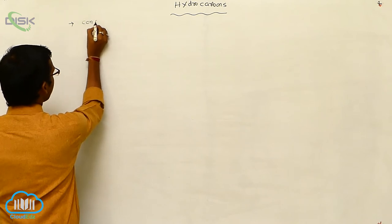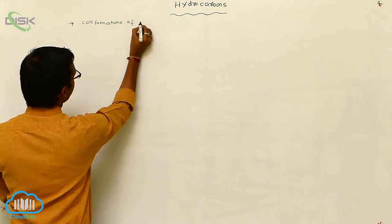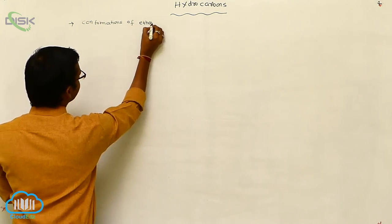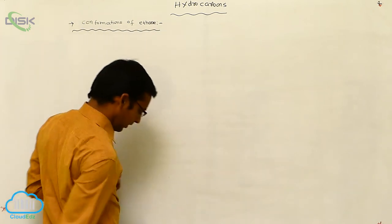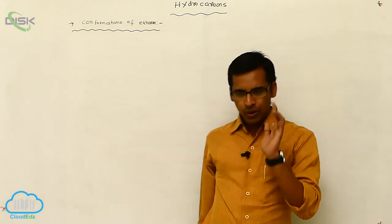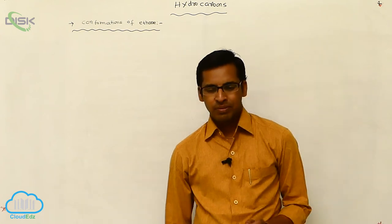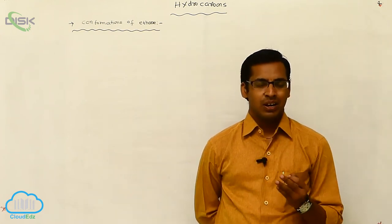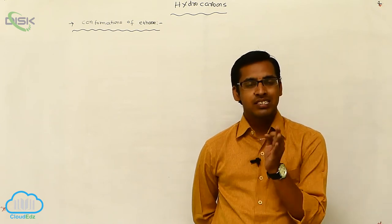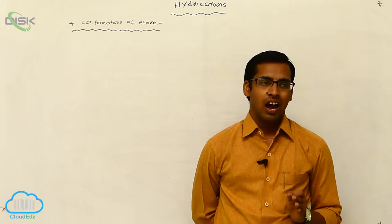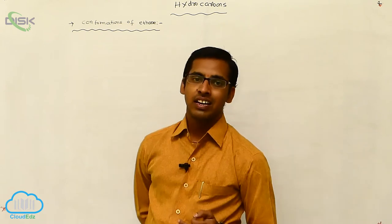We can write conformations of ethane. So before discussing conformations of ethane, first we define conformation. Conformation means the new geometries or new structures produced due to C-C bond rotation, ring flipping, or ring inversion.